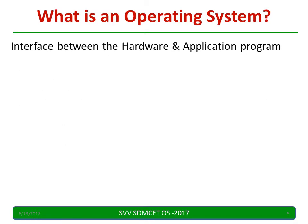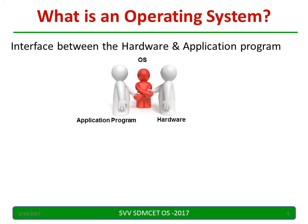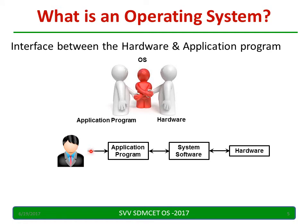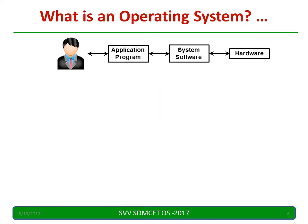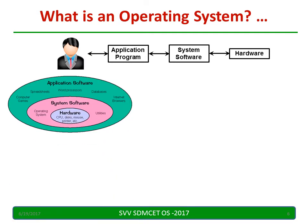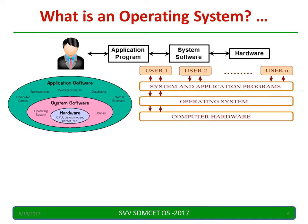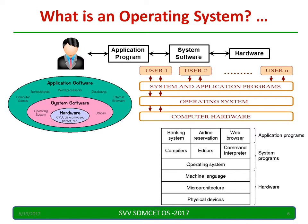What is an operating system? We can say it is an interface between the hardware and the application program. A person usually interacts with the application program; the application program interacts with the system software; and the system software interacts with the hardware. This layered structure is presented in many textbooks and websites — users, application programs, OS, and computer hardware — and different books represent it in different ways but all give the same meaning.